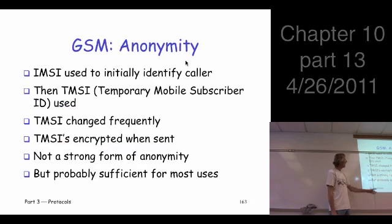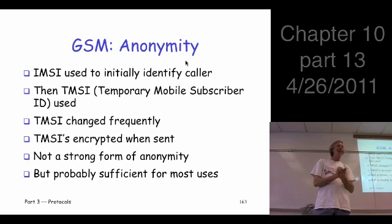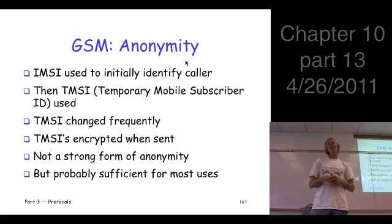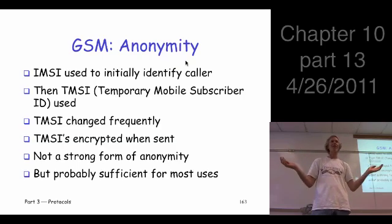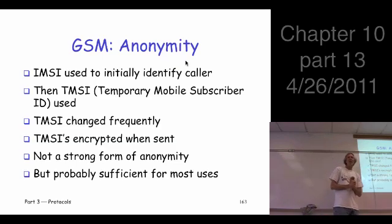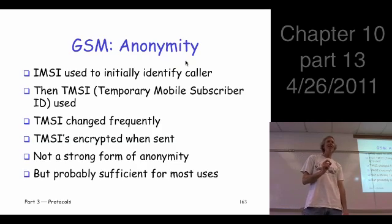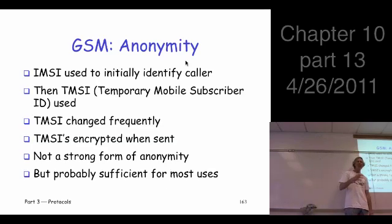For anonymity, the IMSI — your ID — is still sent at the start of the call. Authentication involves the key, so there is an authentication protocol behind the scenes, but if you send your IMSI that's really your ID. What sort of anonymity could you have if you send your ID at the start? Well, they do something — you send the IMSI at the start, then they change it to something called a TMSI: Temporary Mobile Subscriber ID. When they make the change, they encrypt it.